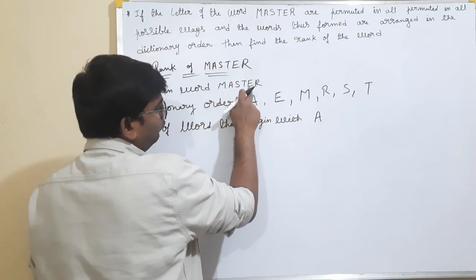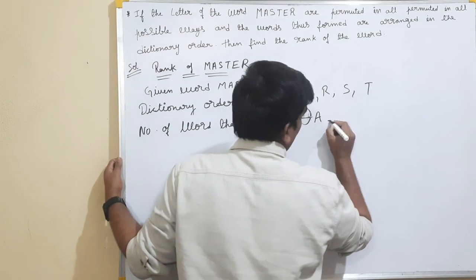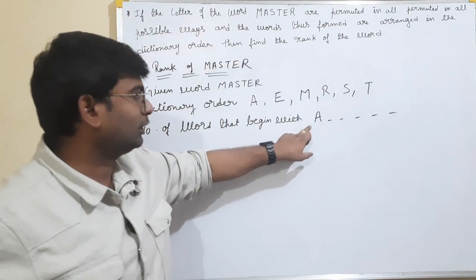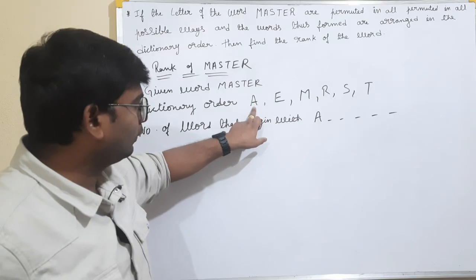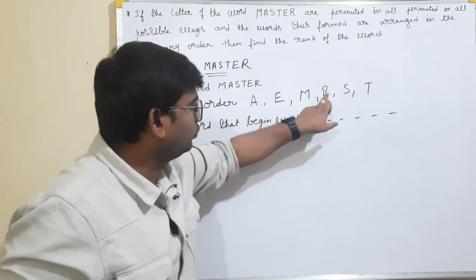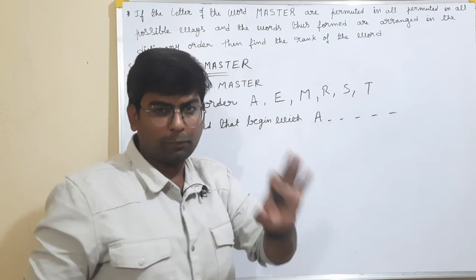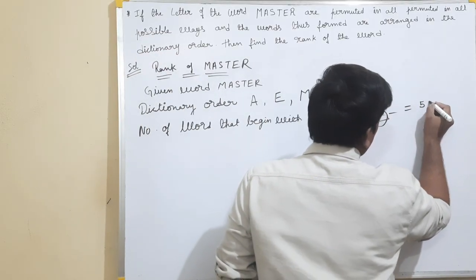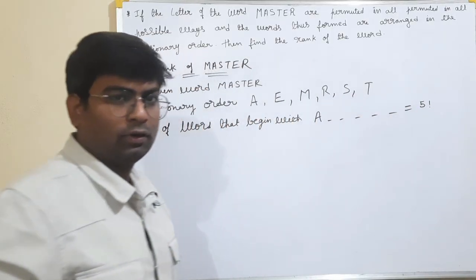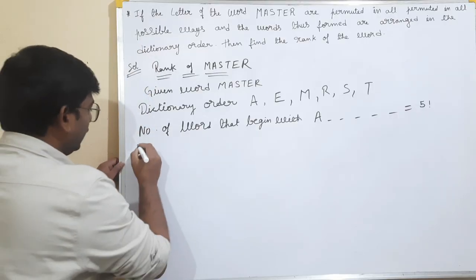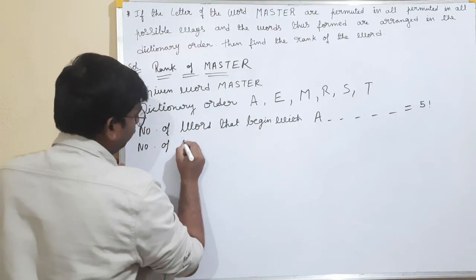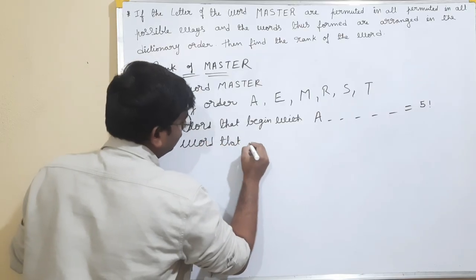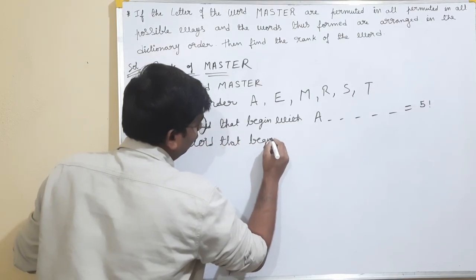One, two, three, four, five spaces. So, one, two, three, four, five spaces. After this word, what is there? One, two, three, four, five. That means five factorial. That means the number of words that begin with - five factorial.